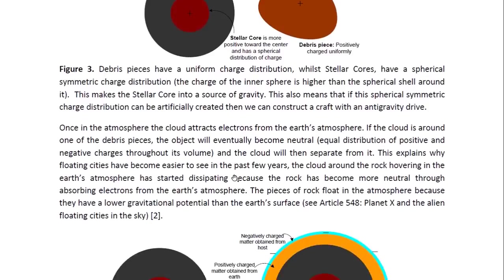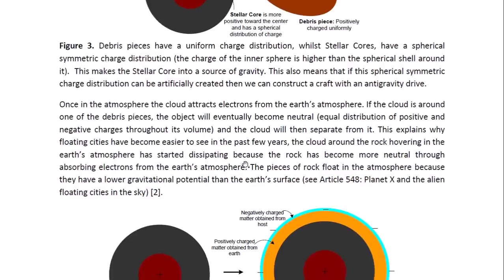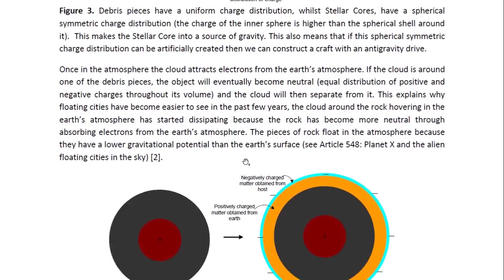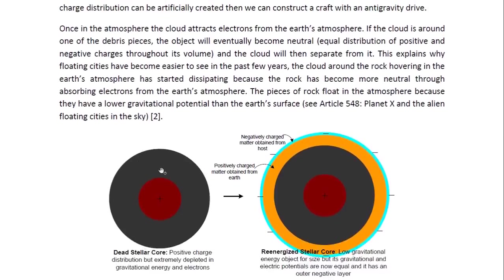Once in the atmosphere, the cloud attracts electrons from the Earth's atmosphere. If the cloud is around one of the debris pieces, the object will eventually become neutral — it will have an equal distribution of positive and negative charges throughout its volume — and the cloud will then separate from it. This explains why floating cities have become easier to see in the past few years: the cloud around the rock hovering in the Earth's atmosphere has started dissipating because the rock has become more neutral through absorbing electrons. The pieces of rock float in the atmosphere because they have a lower gravitational potential than the Earth's surface. For more details, see Article 548 entitled 'Planet X and the Alien Floating Cities in the Sky.'